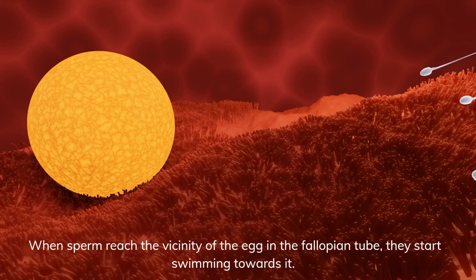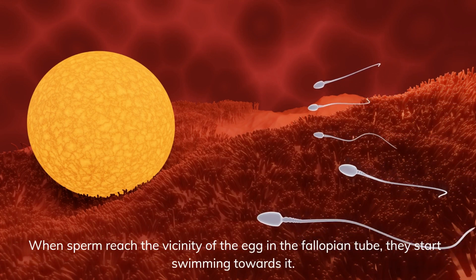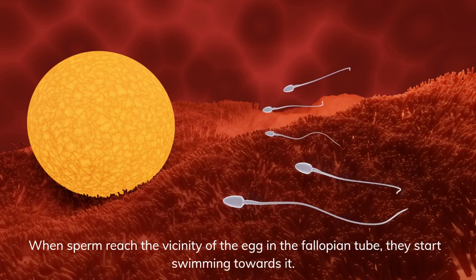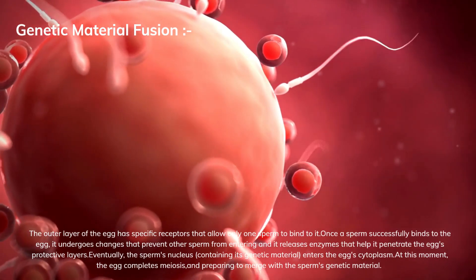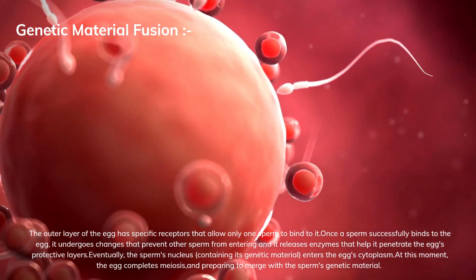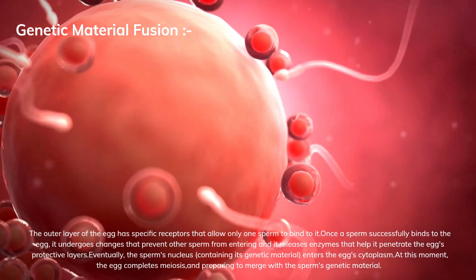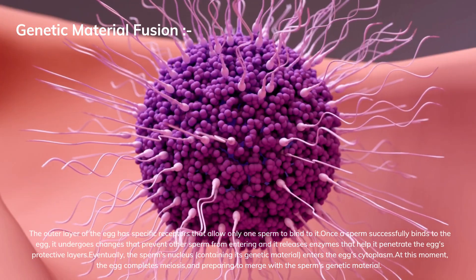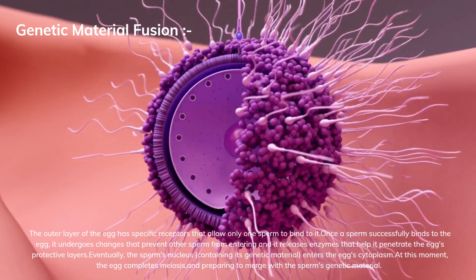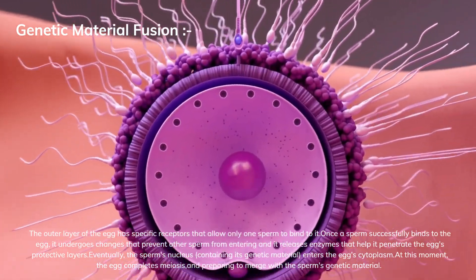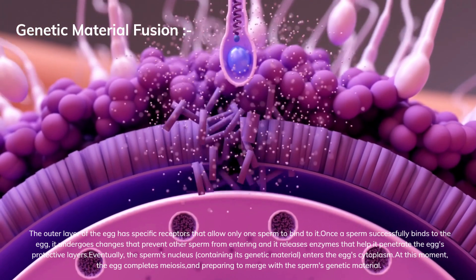When sperm reach the vicinity of the egg in the fallopian tube, they start swimming towards it. The outer layer of the egg has specific receptors that allow only one sperm to bind to it. Once a sperm successfully binds to the egg, it undergoes changes that prevent other sperm from entering, and it releases enzymes that help it penetrate the egg's protective layers.